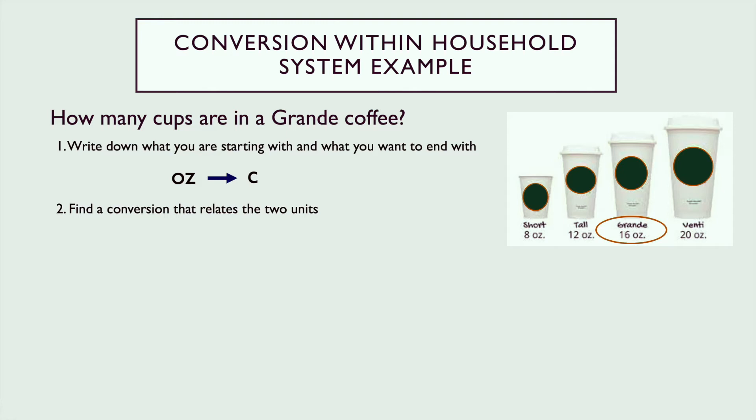Number two, we want to find a conversion that relates the two units. The conversion that relates these two units from that chart is one cup equals eight ounces.